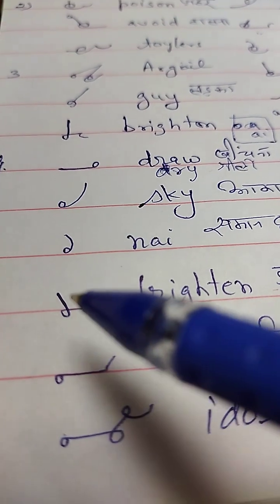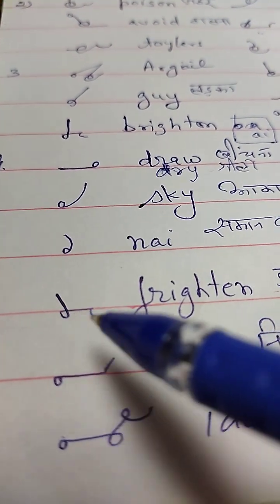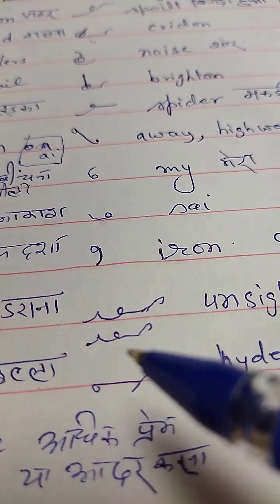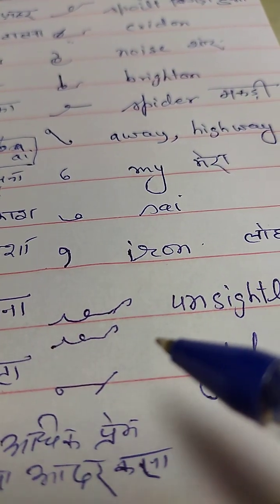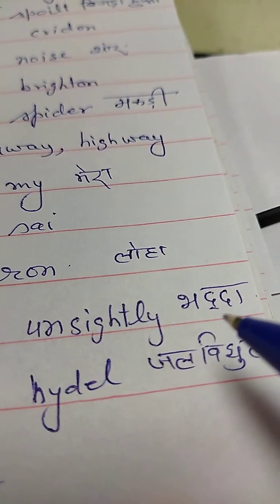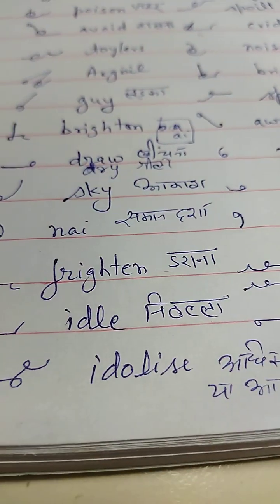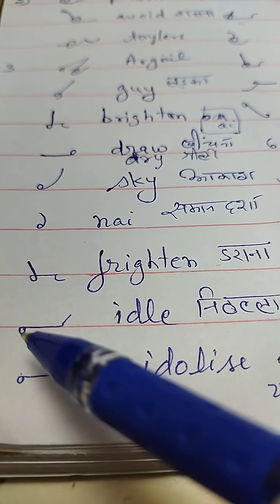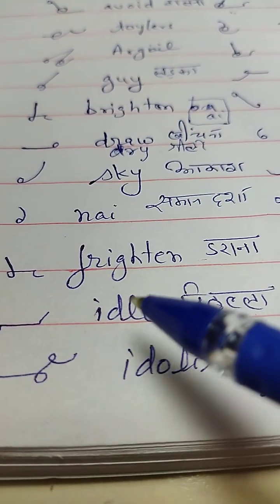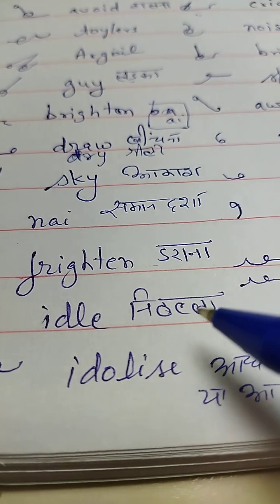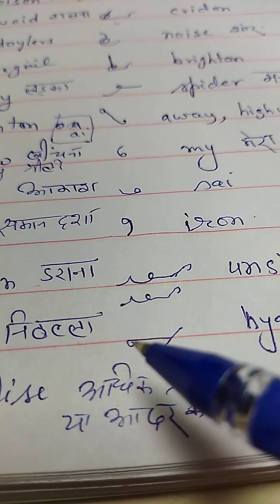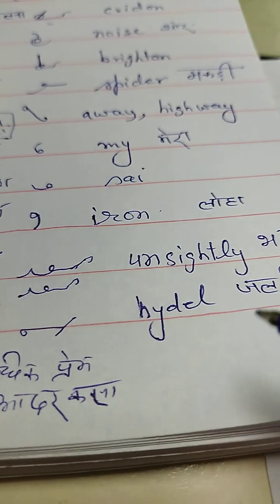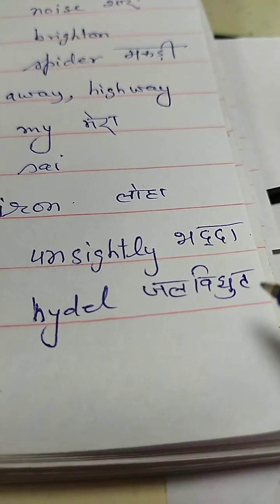Frightened — Dharana. Unsightly — Badda. This is Idle — Nithalla. Idle or High-dale — Jal-Vidit.